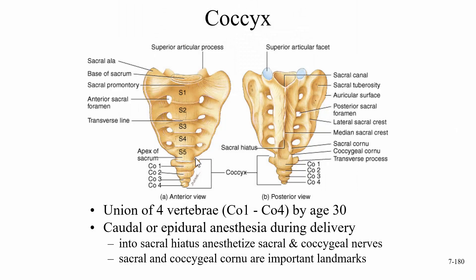The coccyx — your tailbone — is a union of four vertebrae going from CO1 down to CO4, and it should fuse by age 30. Caudal or epidural anesthesia during delivery is sometimes introduced into the sacral hiatus, which anesthetizes the sacral and coccygeal nerves. The sacral and coccygeal cornu are often used as landmarks to find the sacral hiatus. Cornu means horn, so we have sacral cornu and coccygeal cornu, and there's a transverse process visible as well.